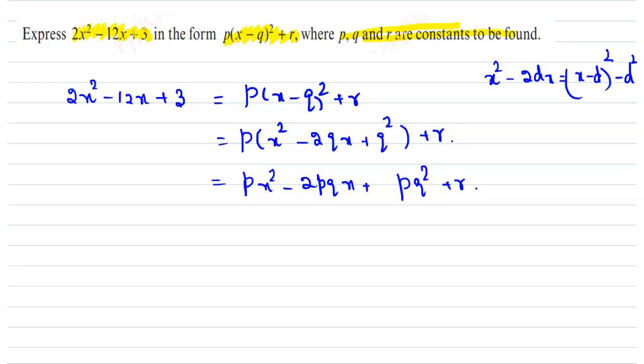Equate the coefficients. For x², we get p = 2. For the coefficient of x, 2pq = 12. Since p = 2, we have 4q = 12, which implies q = 3.